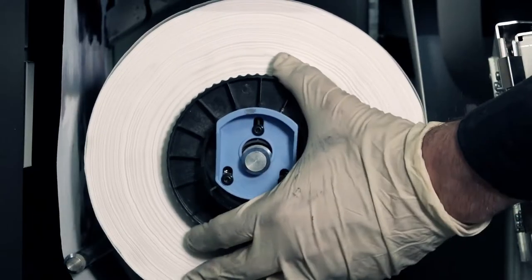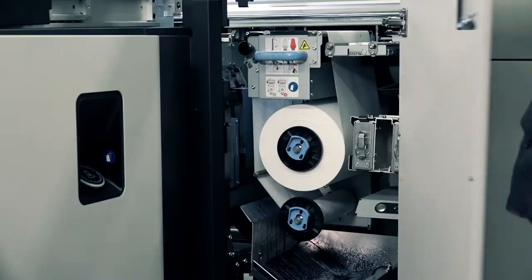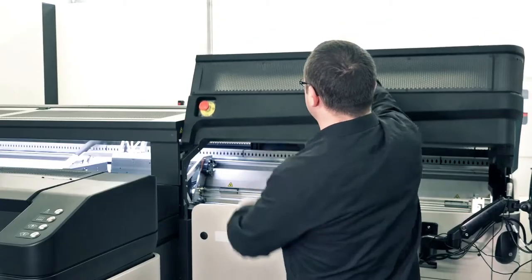If necessary, turn the roll to tighten the material. Close the printhead cleaning roll door and then the carriage cover.